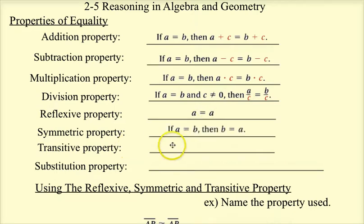Symmetric property. If A equals B, then B equals A. You're sort of just flip-flopping it and having it the other way around, and that one makes sense as well.